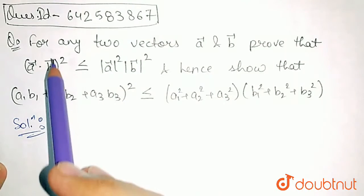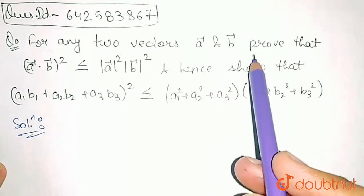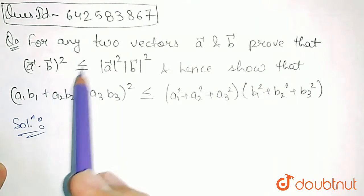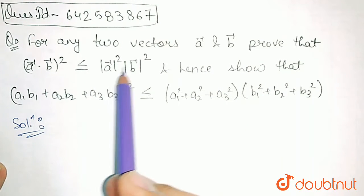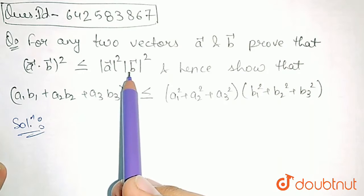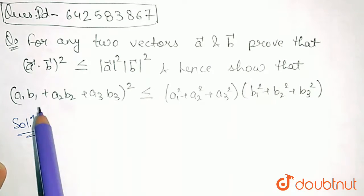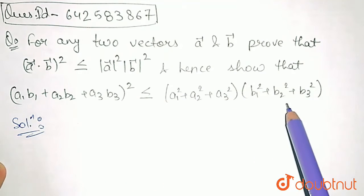In this question, for any two vectors A and B, we have to prove that A dot B whole squared is always less than or equal to mod A squared into mod B squared. And hence, we have to show that this condition is true.